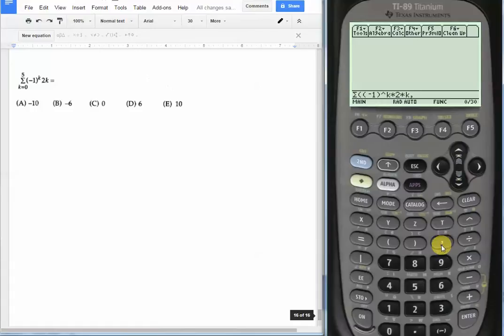We have to tell the calculator what variable we are solving for. In this case, it's k. So comma, k.